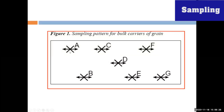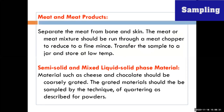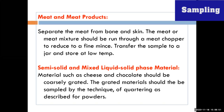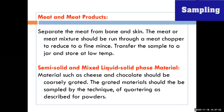If we are going to analyze meat and meat products, we also need a sample. Separate the meat from bone and skin. The meat or meat mixture should be processed through a meat chopper or mincer. After mincing, thoroughly mix the material, perform quartering to obtain the sample, place it in a jar, and store at a low temperature.